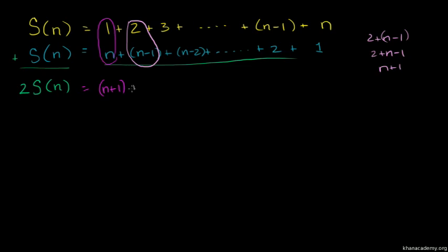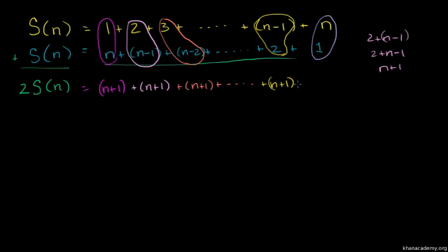Continuing this pattern, 3 plus n minus 2 also gives n plus 1. Every pair we form adds up to n plus 1.